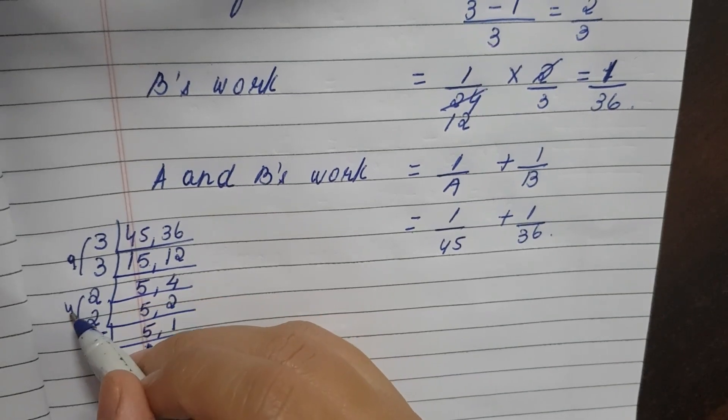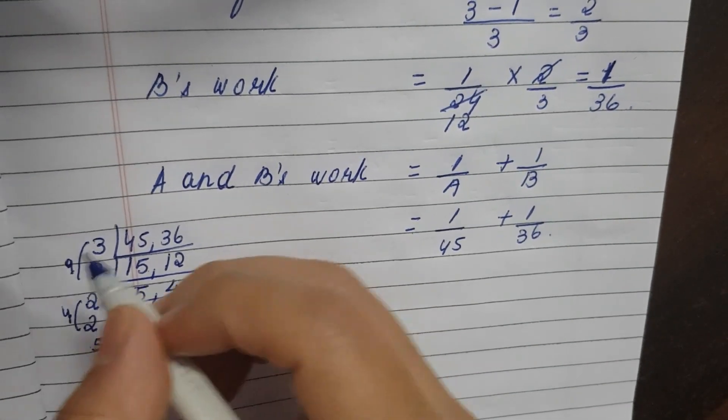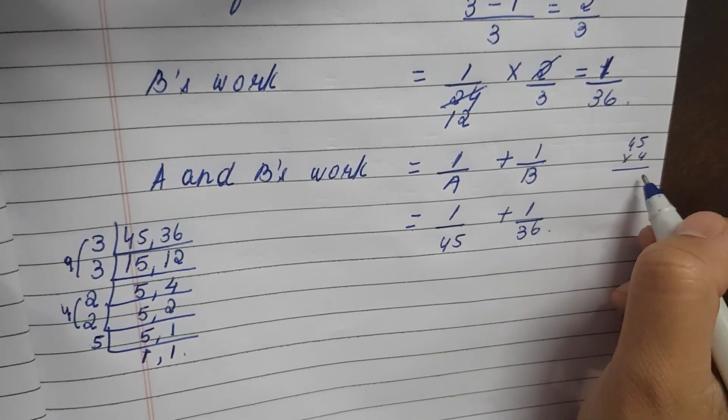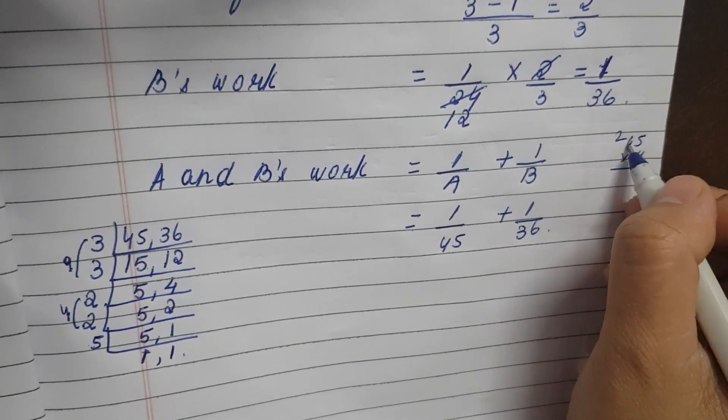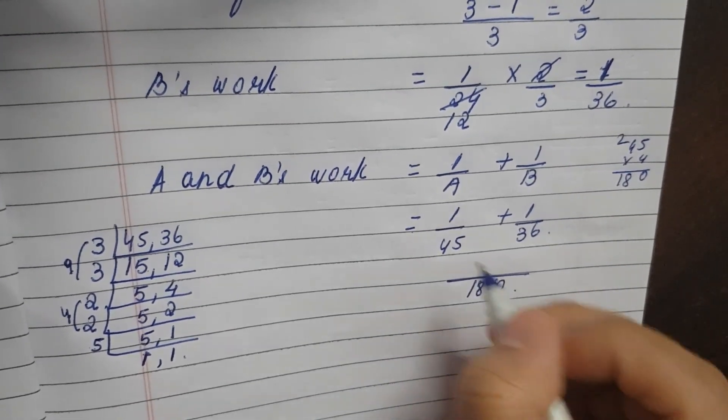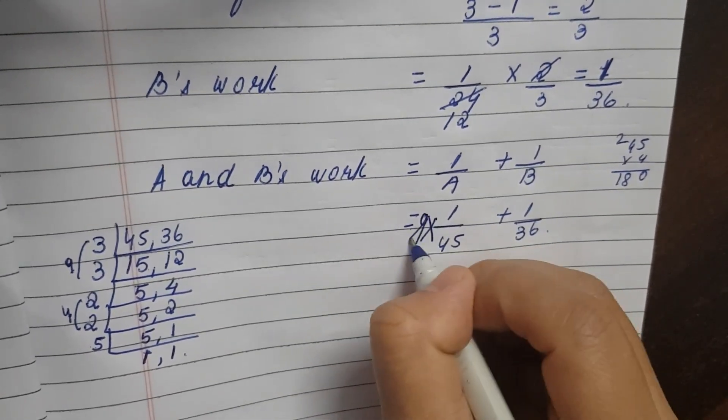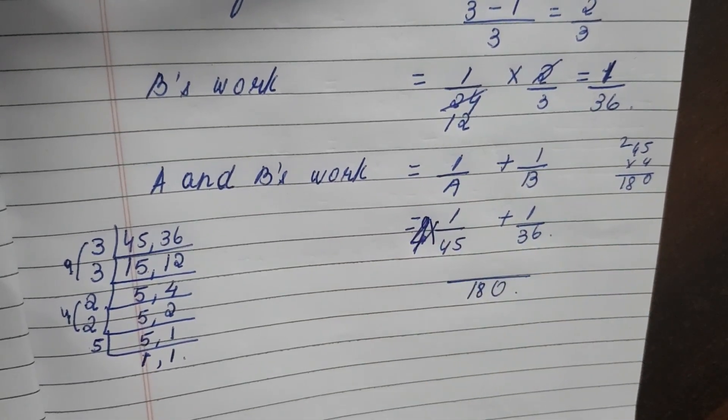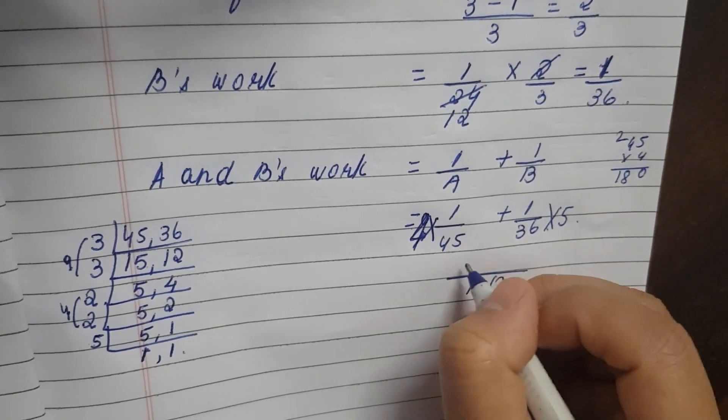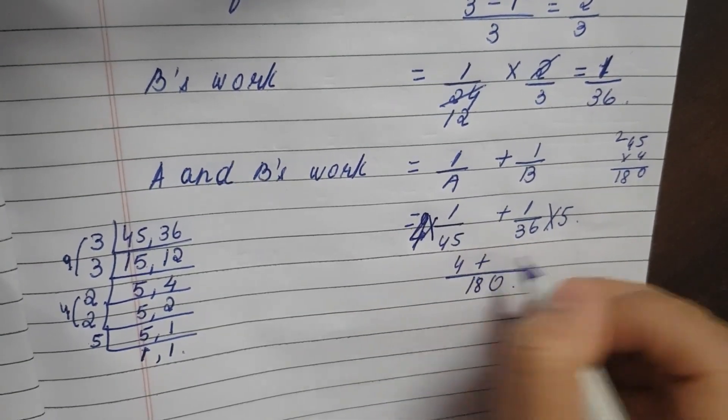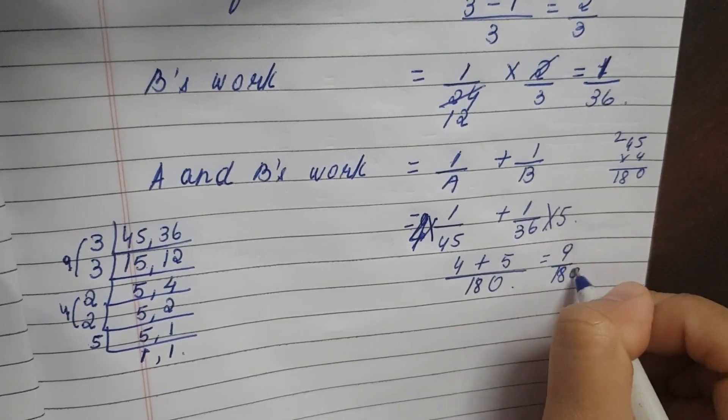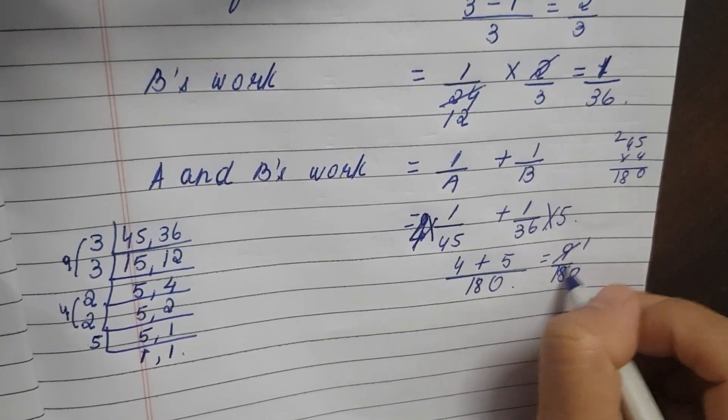Now 5, 1, 1. So 3 times 3 is 9, 2 times 2 is 4, so 5 times 9 is 45, 45 into 4 so 4 fives are 20, 4 fours are 16, 18. So it is 180. So 45 times 4 is 180 and 36 into 5 is 180. So 4 plus 5 is 9. So it is 9 by 180. So 9 one time, 18 two times. Cancel here, so this is 1 by 20 days.